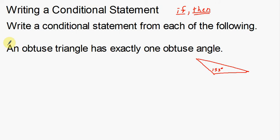Therefore, at the beginning, 'an obtuse triangle' is going to be my hypothesis part. What I want to do is write this as an if-then statement. You've got to use your English skills, your sentence structuring skills, to write this as an if-then statement with a blatantly apparent hypothesis and a blatantly apparent conclusion.